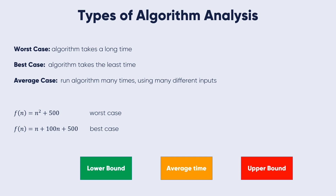The average time varies between the lower bound and the upper bound. The upper bound corresponds to the worst case and the lower bound represents the best case. For example, if one algorithm completes in one second, that is the lower bound. Another algorithm performing the same task in ten seconds represents the upper bound, and the average time is between one and ten seconds.